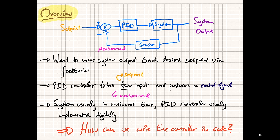In general, PID controllers are used to control an uncertain system via feedback. More specifically, you want a system to track a setpoint or reference by letting the controller adjust the signal going into the system. The controller uses the setpoint and feedback to generate this control signal, where the feedback is generally a measurement acquired by a sensor.